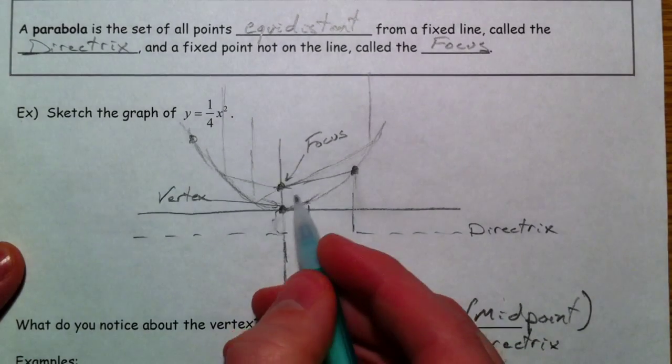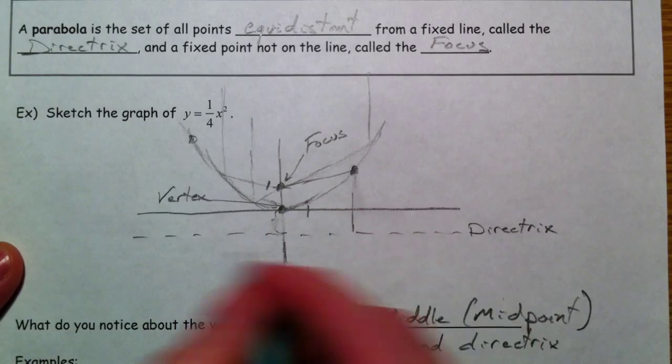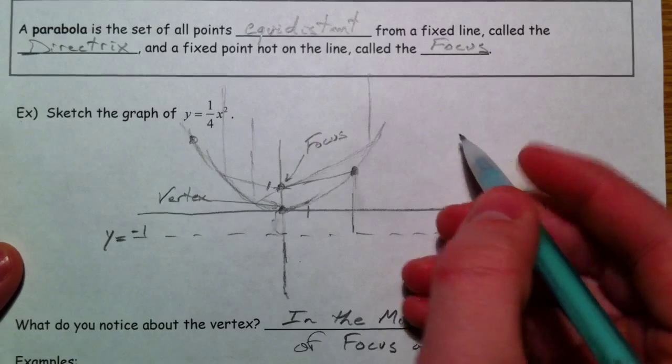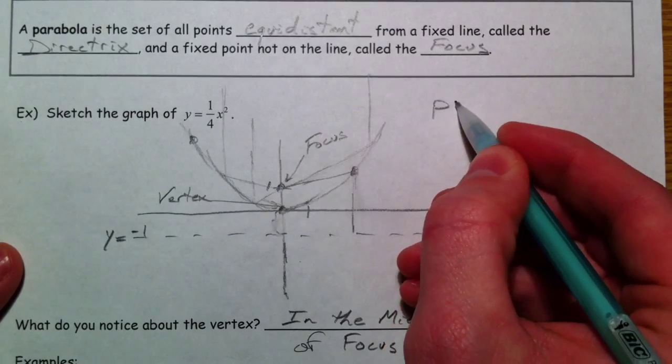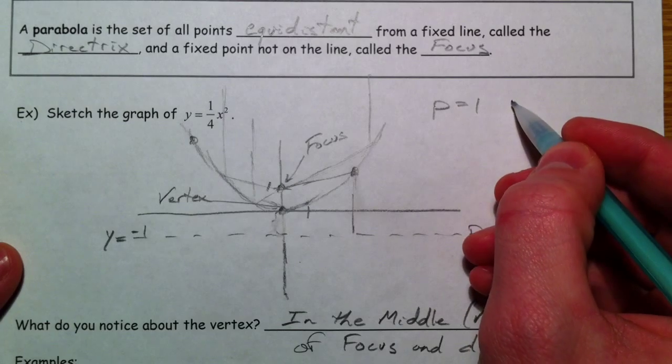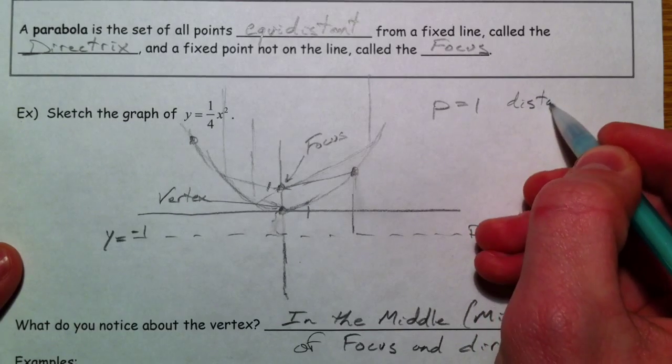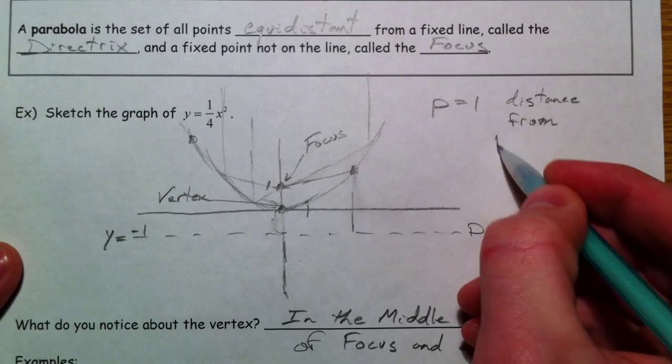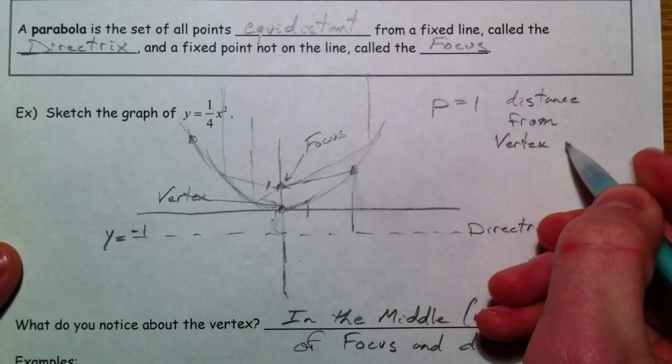In this case, this is at 1 and this is at y equals negative 1. And so what we do is p is equal to 1. p usually stands for distance to focus, from vertex to focus.